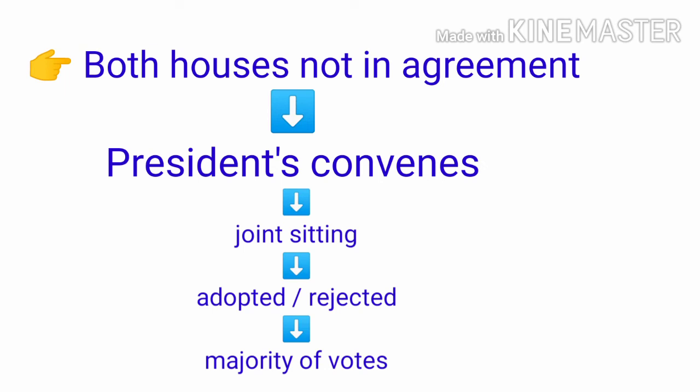In case both the Houses do not come to an agreement, the President intervenes and calls for a joint sitting of the two Houses. The disputed provision is finally adopted or rejected by a simple majority of those present and voting. The final stage of the lawmaking procedure is getting the assent of the President.